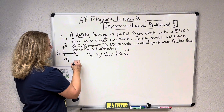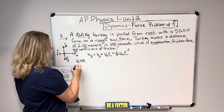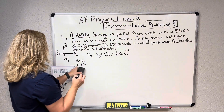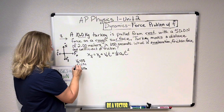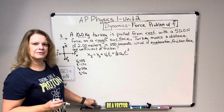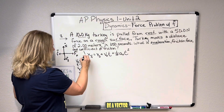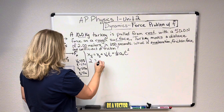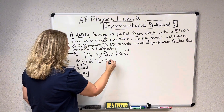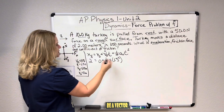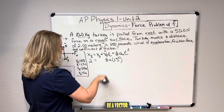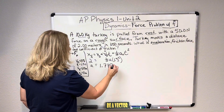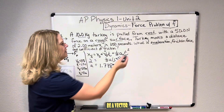My initial velocity is zero, my time is 1.5 seconds, and my displacement XF is two meters, with X-initial equal to zero. Plugging in: two equals zero plus one-half times acceleration times 1.5 squared. Solving for acceleration, you get 1.778 meters per second squared. I now have my acceleration — that's the first part done.